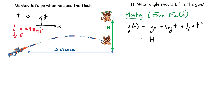The monkey lets go of the branch, so it has zero initial velocity — that term drops out. The acceleration is downward, so I put a negative sign and write one-half g multiplied by t squared, where g is taken as positive 9.8. This gives my equation for the monkey as a function of time: y_monkey(t) = H − ½g t². At t=0 you're at height H, and as time increases the height decreases.